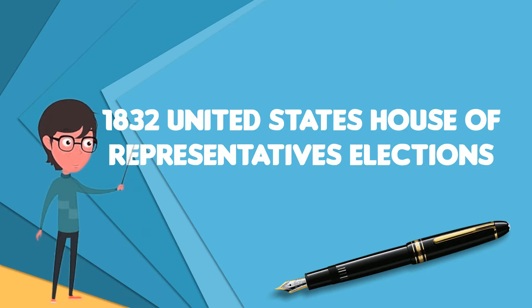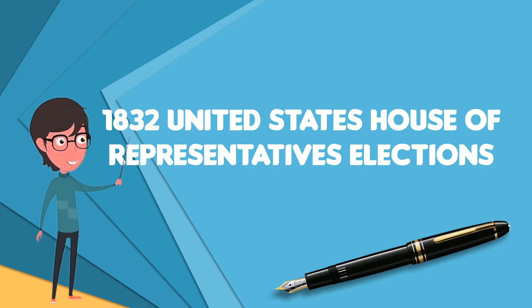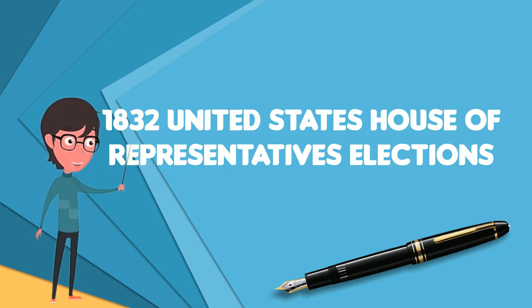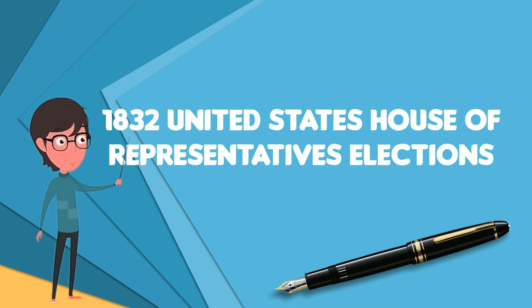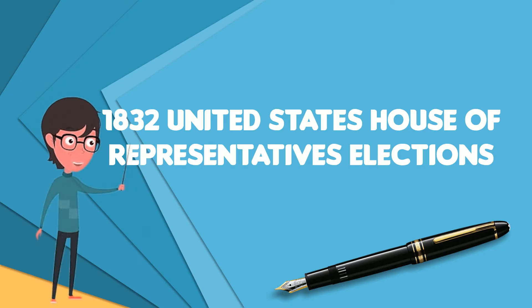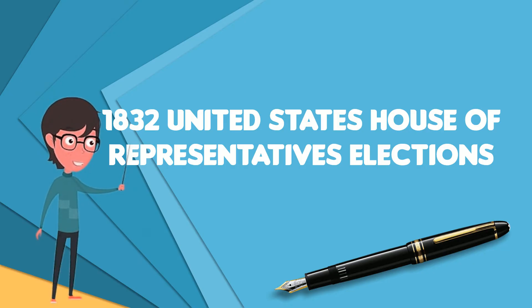President Andrew Jackson and the Jacksonians showed a distrust for the banking sector, particularly the Central Second Bank of the United States, which was strongly supported by the rival anti-Jacksonian party.